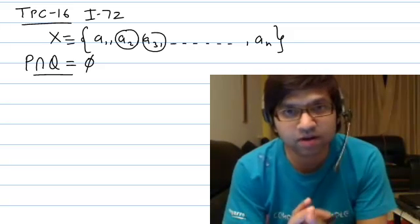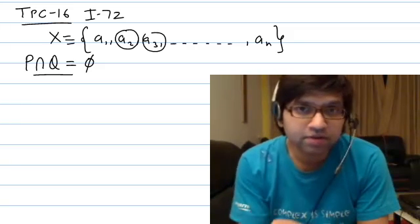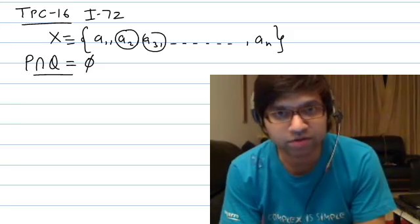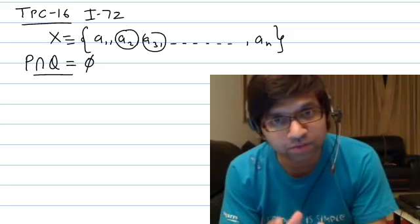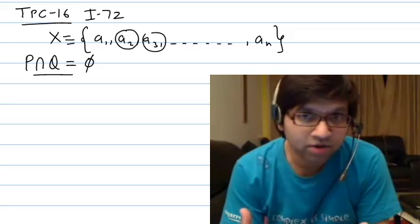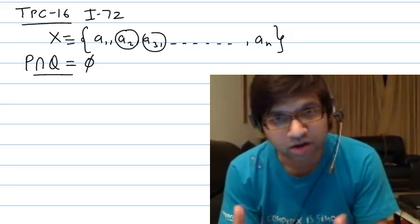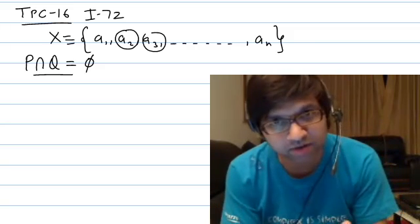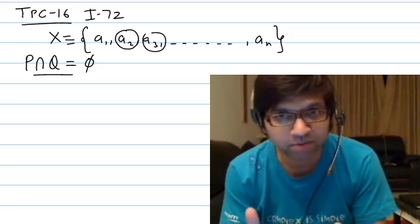This is TPC 16, Illustration 72. In this illustration, there is a set X given with a number of elements, all different from each other. We are supposed to make two subsets P and Q, formed with replacement — meaning we first select elements to form subset P, and then these elements are replaced back into the main set X, and then Q is chosen. So P and Q can have common elements.